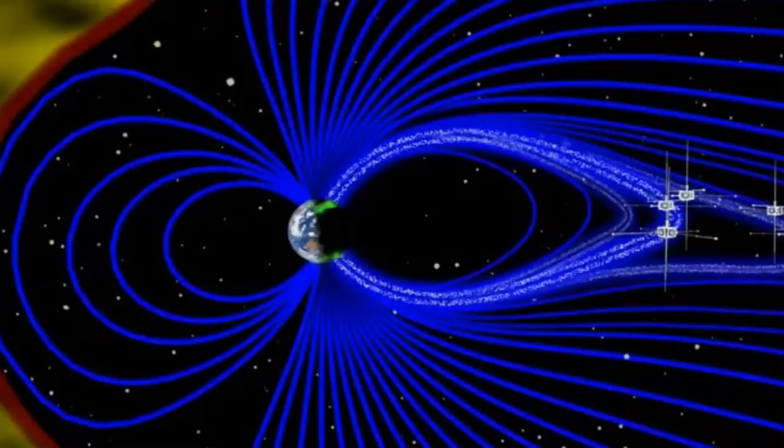All signs are pointing to that, where we're starting to see some changes in the structure of this around the planet. Now, we also have this South Atlantic anomaly that has appeared here in our lifetimes and is seeming to grow larger, and this feeds into the idea that the poles may be starting to flip or starting to move at least.